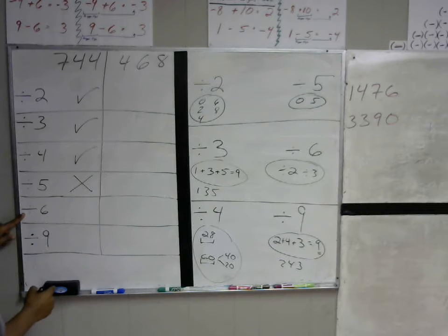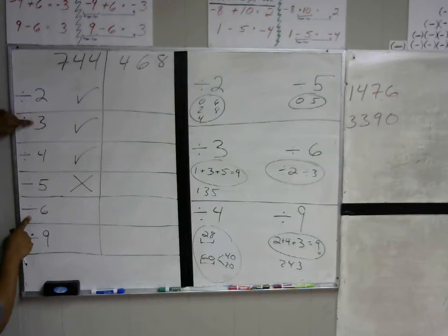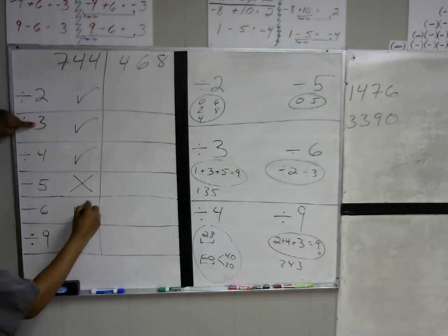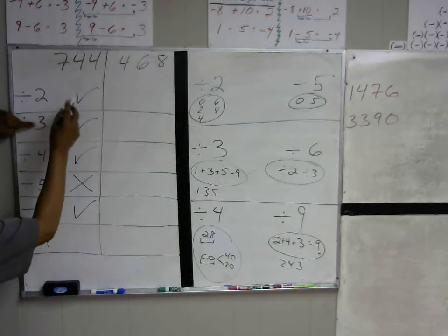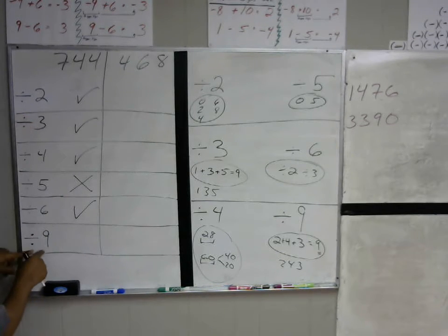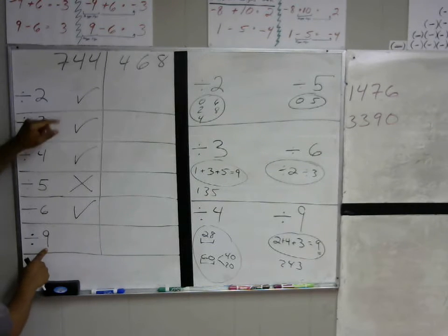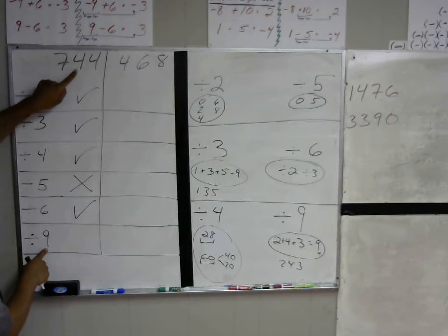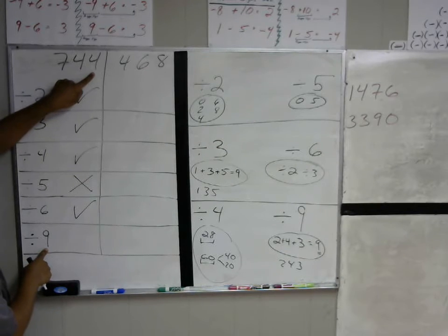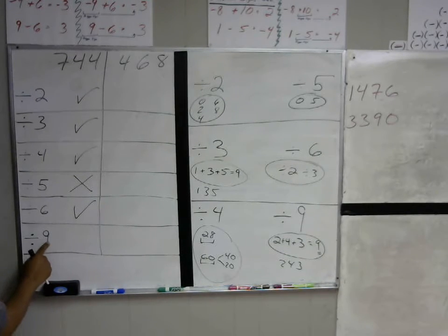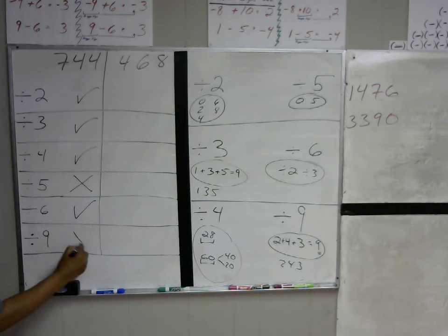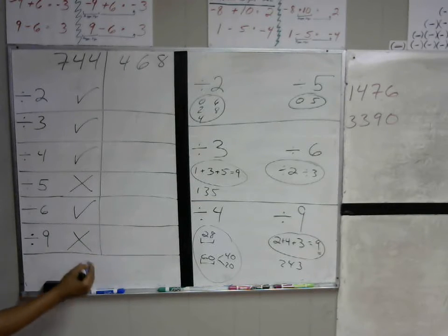For 6: to be divisible by 6, we check if it's divisible by 2 and 3, and it is, so you can divide 744 by 6. Finally, can you divide this by 9? 7 plus 4 is 11, and 11 plus 4 is 15. 15 is not in the nine times tables, so this cannot be divided by 9.